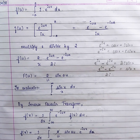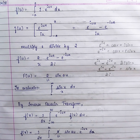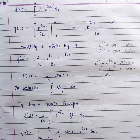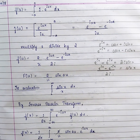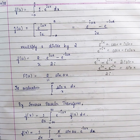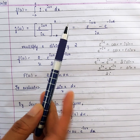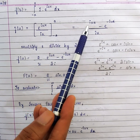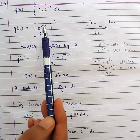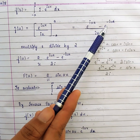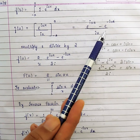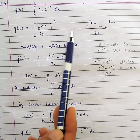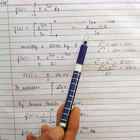We simply integrate e^(iux). Just as integrating e^(5x) gives e^(5x)/5, here iu is the constant, so the result is e^(iux)/(iu). Applying the upper limit a and lower limit minus a gives [e^(iua) − e^(−iua)] / (iu). The Fourier transform for the given function is now obtained and we just need to simplify.